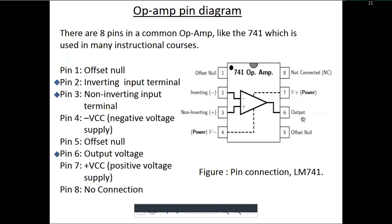The actual pin diagram of IC-741 has a total of eight pins. Pin number 2 and pin number 3 are the inverting and non-inverting inputs. Pin number 7 and pin number 4 are plus VCC and minus VCC. Pin number 6 is the output. Pin number 8 is NC (not connected). Pin numbers 1 and 5 are offset null, which we will discuss later as a parameter of op-amp used to set offset voltages.